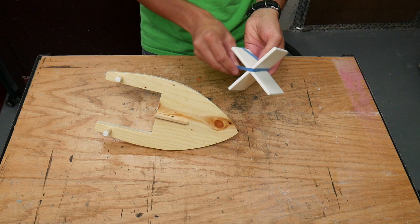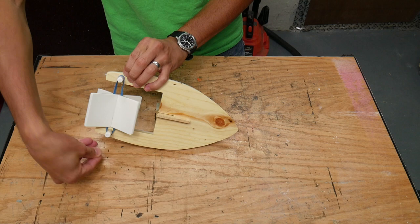To make the boat go you just wind the paddle backwards. Then let it go.